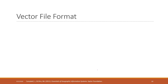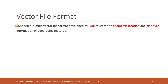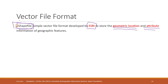Now let's look at the most common vector file formats. The most common one is called the shapefile. Shapefile is developed by ESRI to store both spatial information and non-spatial information. This is the most widely used vector data file format.